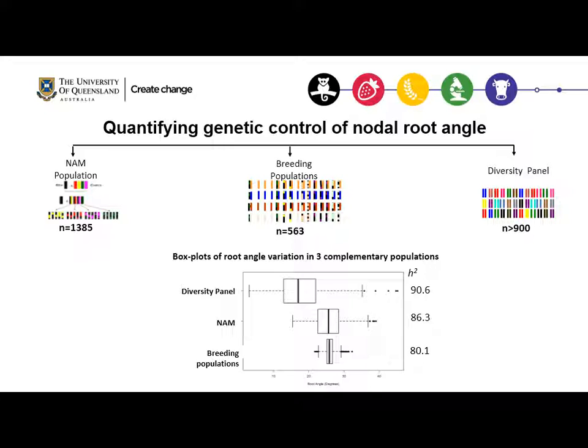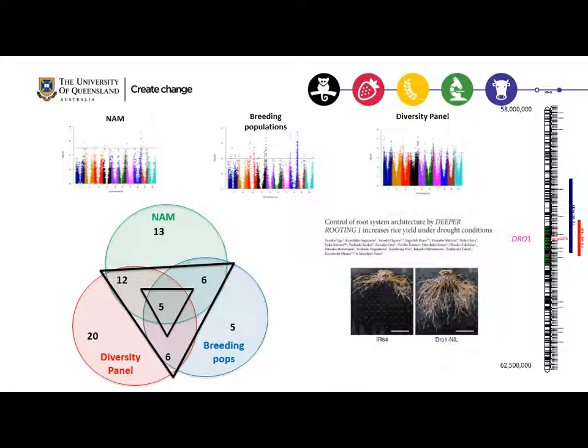Heritability is high, and higher heritability for the diversity panel shows greater genetic variance observed. We also have high-density SNP data for all of these populations, so we combined the phenotypic data with the genotypic data to identify regions of the genome significantly associated with nodal root angle across all three populations. We identified 30 regions common between two populations and five in common across all three populations. We are now mining these regions for candidate genes — for example, we identified DRO1, a deep-rooting gene identified in rice which controls root architecture and increases yield under drought conditions.